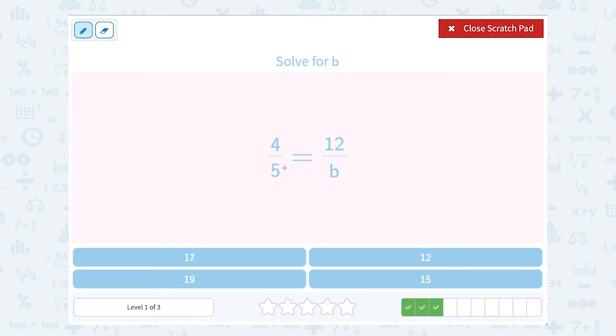Solve for b. We have 4 fifths is equal to 12 over b. If we cross multiply, 4 times b gives us 4b. And 5 times 12 gives us 60.